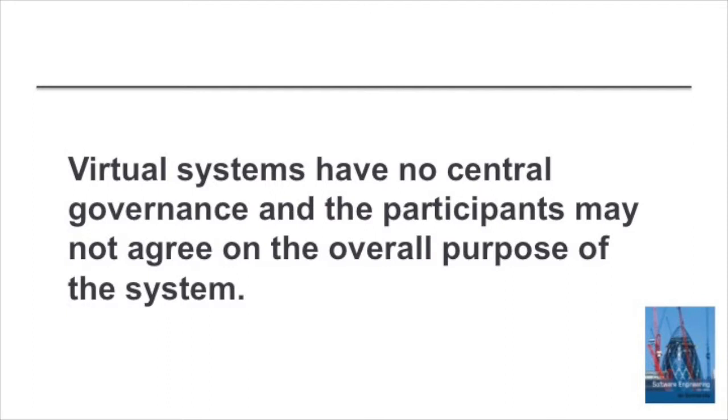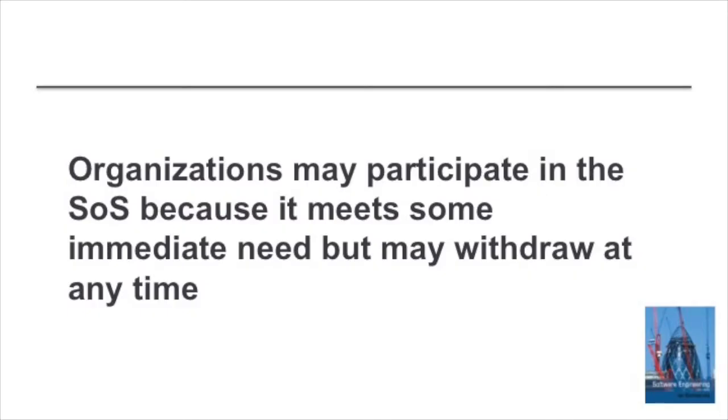Meyer's final classification was what he called a virtual system of systems. A virtual system of systems is one where the systems cooperate but there is no overall governance. There's no board making policy about the system of systems — how it might evolve, how it should change, how it should be operated, and so on. The fundamental distinction between these different models of systems of systems is the governance.